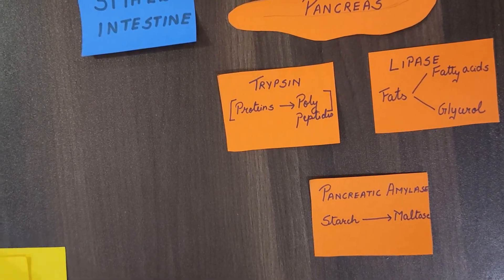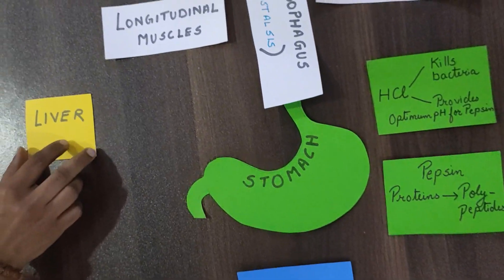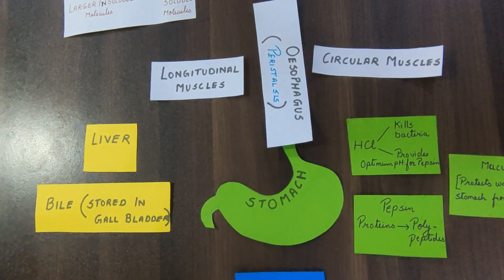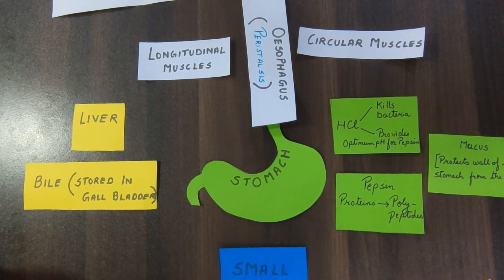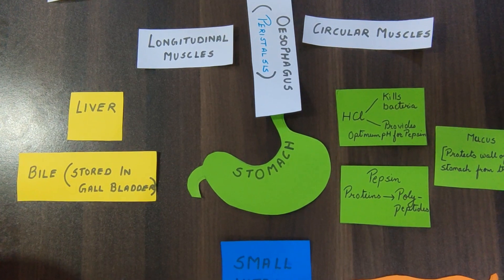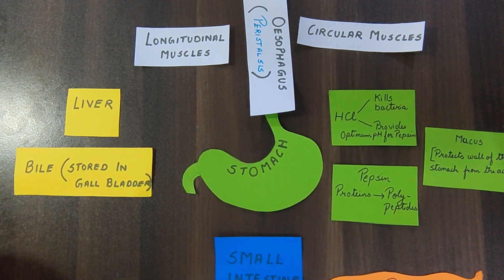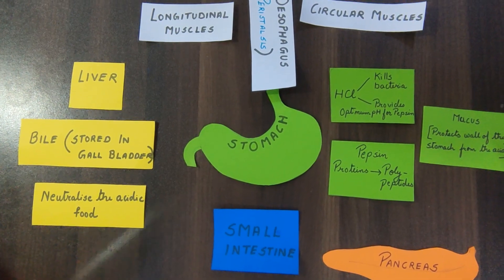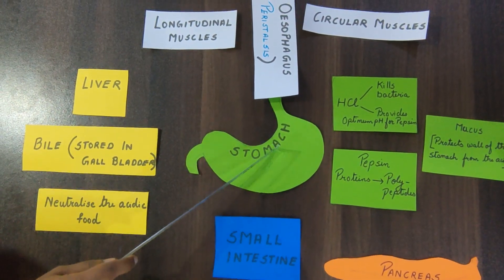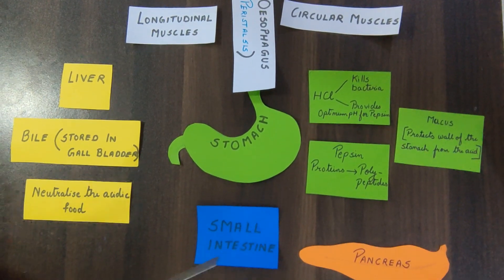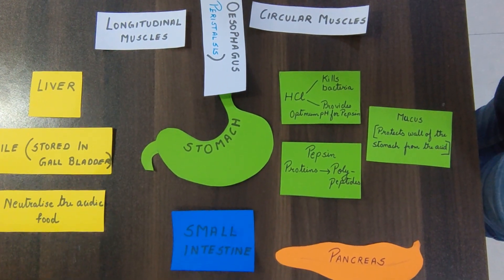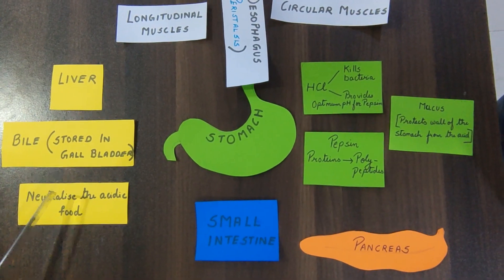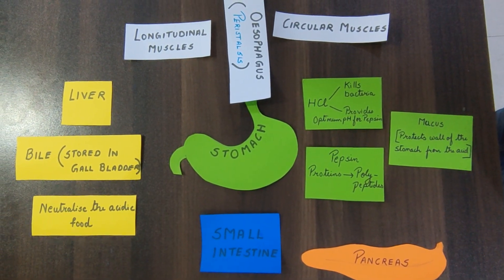The liver produces something called bile and is connected to the gall bladder, whose only function is the storage of bile. Bile helps to neutralize the acidic food coming from the stomach into the small intestine, since the food is acidic due to the HCl produced by the stomach.